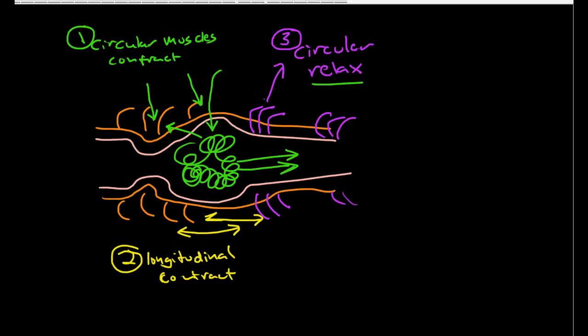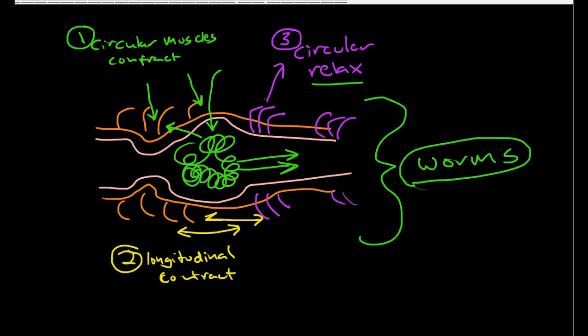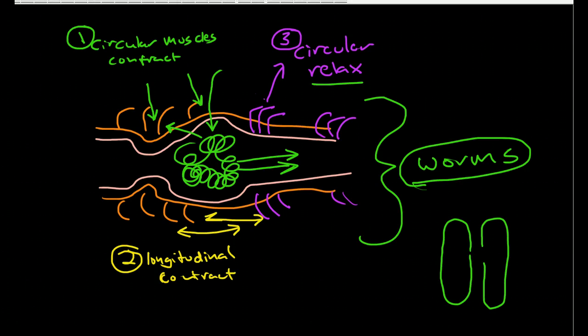Interestingly enough, this is the exact same kind of muscular reaction that allows worms to propel themselves. This brings us back to that theme that we are in fact a hollow worm. Yes, we're a very complex hollow worm, but we still have many things in common with our less sophisticated cousins.